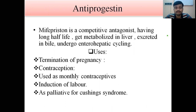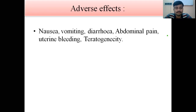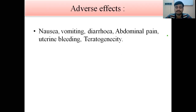Just like antiestrogens, there are also antiprogestins. One of the main drugs is mifepristone. It is a competitive antagonist with a long half-life, metabolized in the liver, and excreted in bile through the enterohepatic cycle. Its major uses are termination of pregnancy, contraception, use as a monthly contraceptive, induction of labor, and as palliative therapy for Cushing's syndrome. Its adverse effects include nausea, vomiting, diarrhea, abdominal pain, uterine bleeding, and teratogenicity.